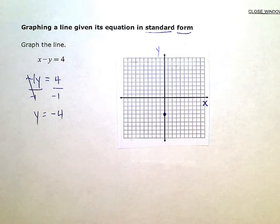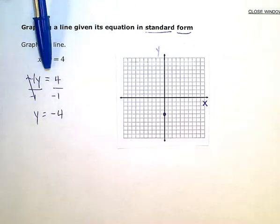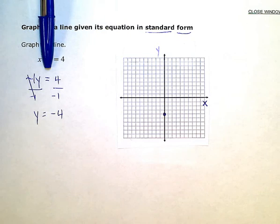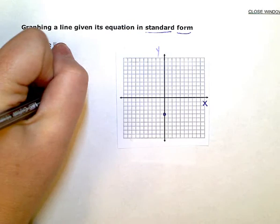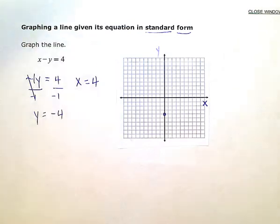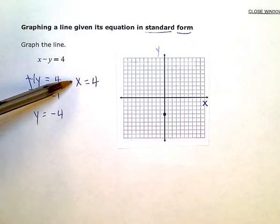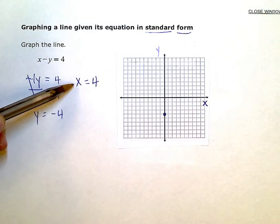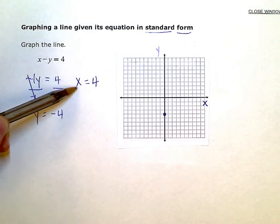So this time, I'm going to kind of block out or zero out the Y term. So if you kind of mentally ignore the Y term, what's left of my equation is X equals 4. And I don't even need to do any solving there because it's already solved for X. X is equal to positive 4.